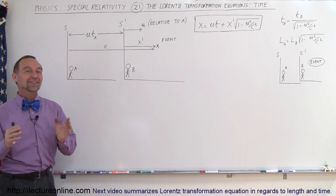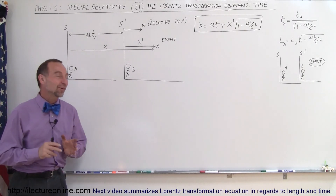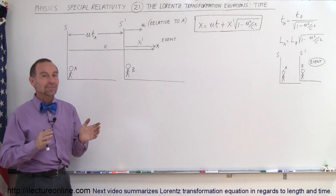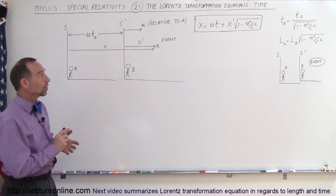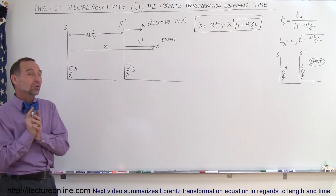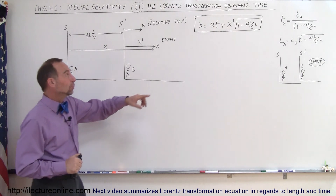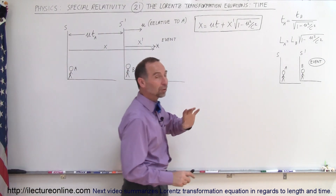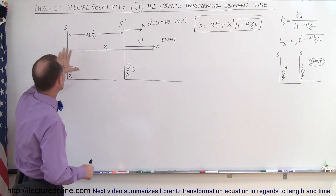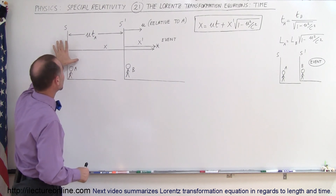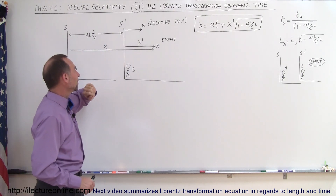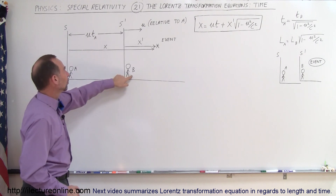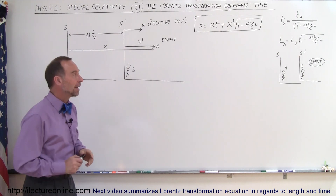Welcome to Electronline. The next Lorentz transformation equation we're going to look at is the time transformation equation. We're going to take the result of the last one where we had the relationship between x and x prime. Remember there are two reference frames: the stationary reference frame and the moving reference frame, with observer A in the stationary frame and observer B in the moving reference frame.